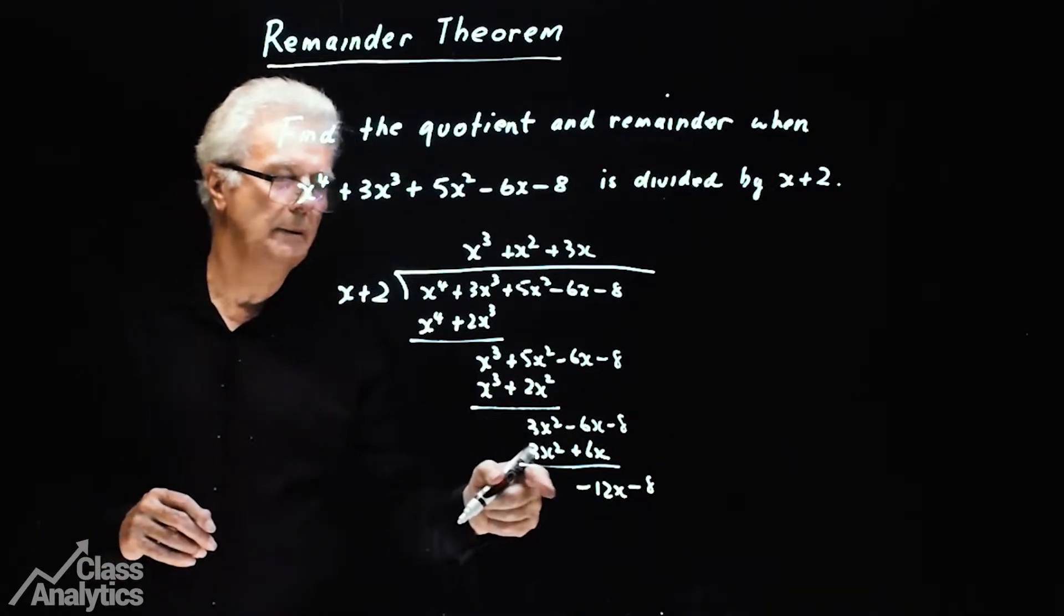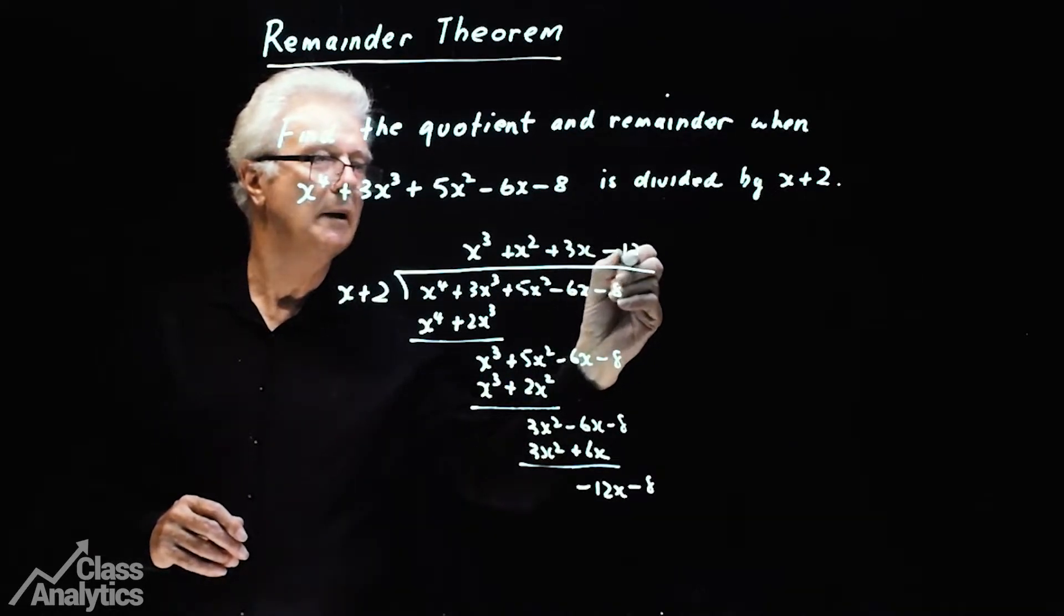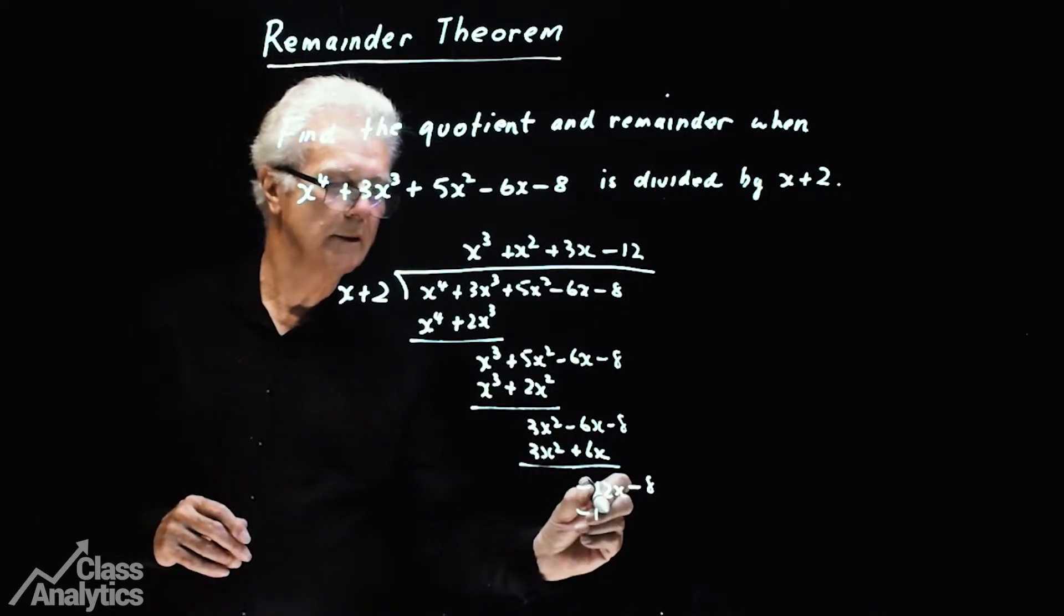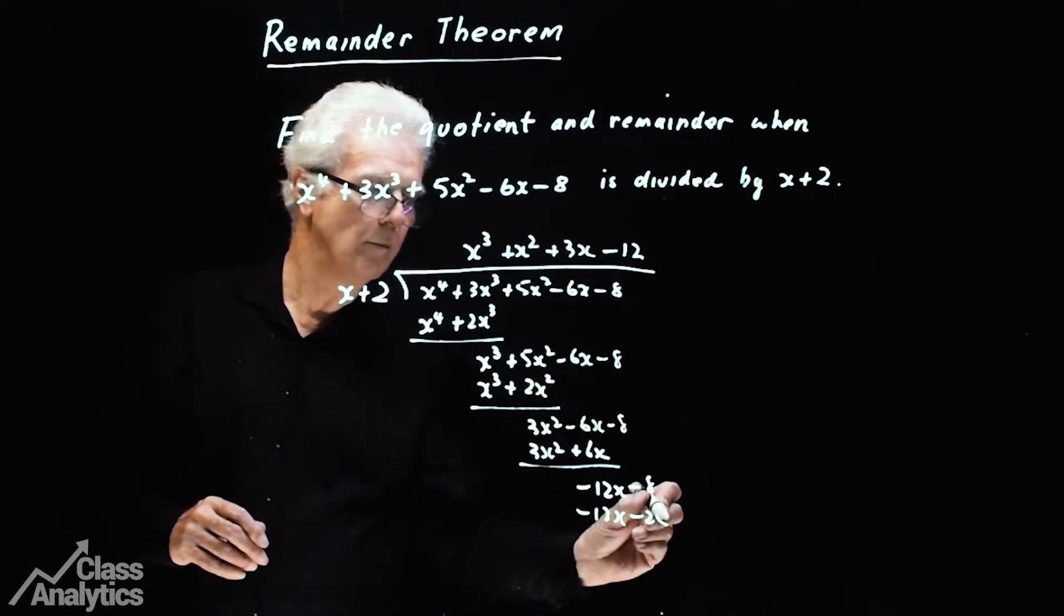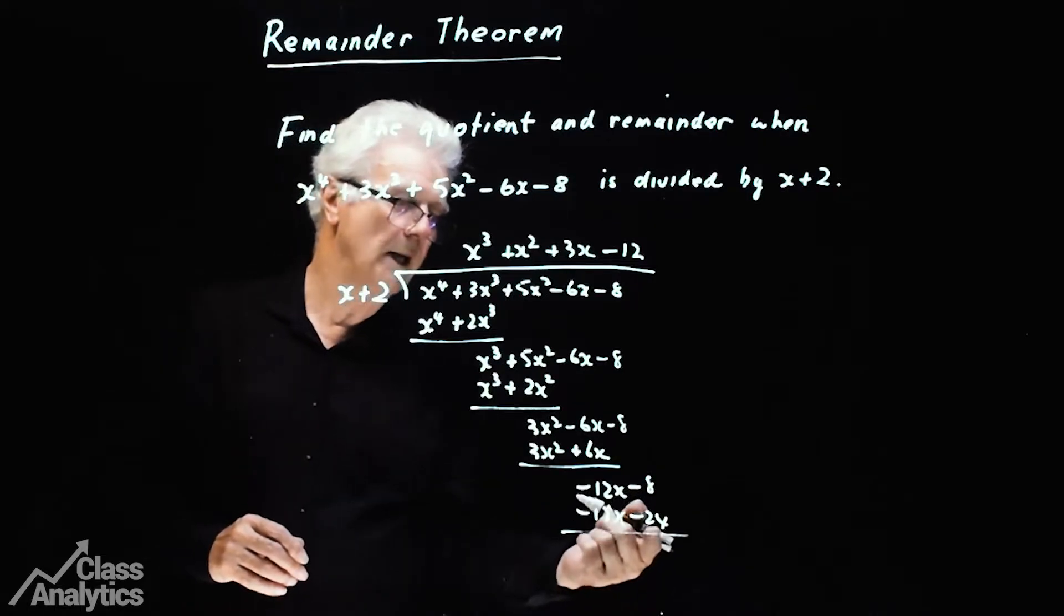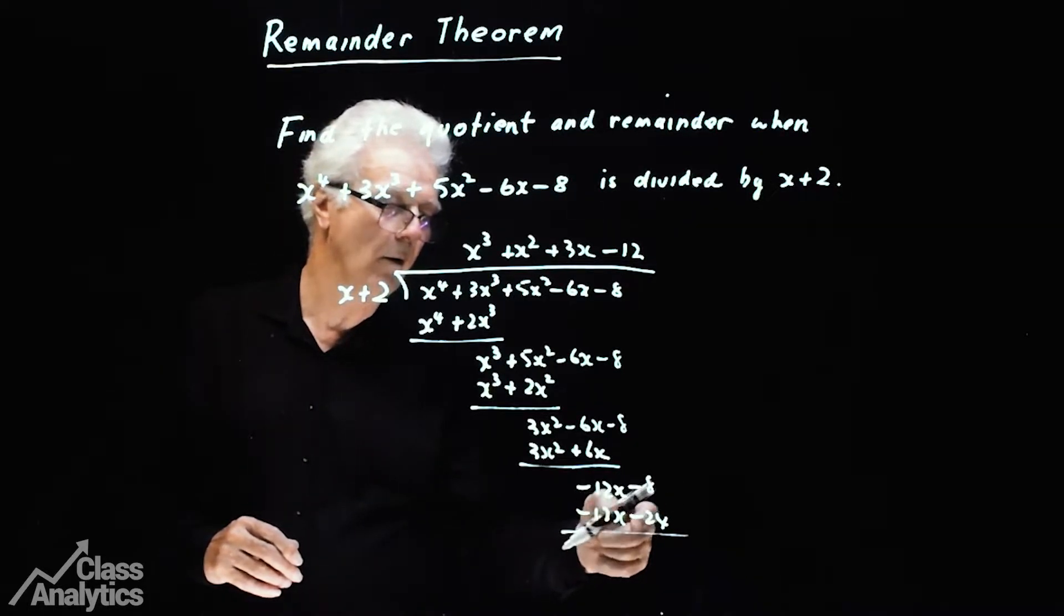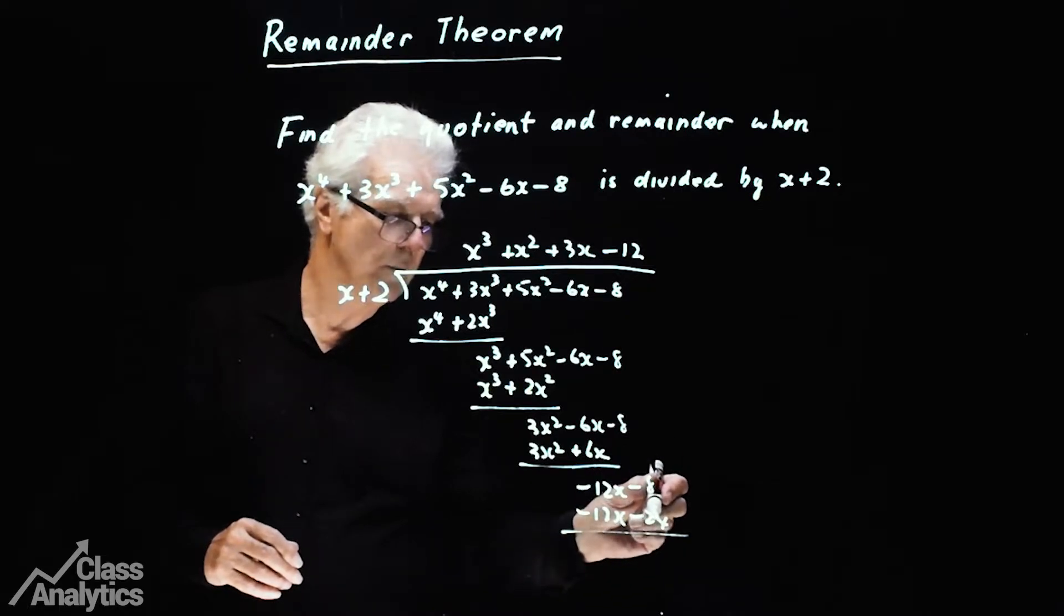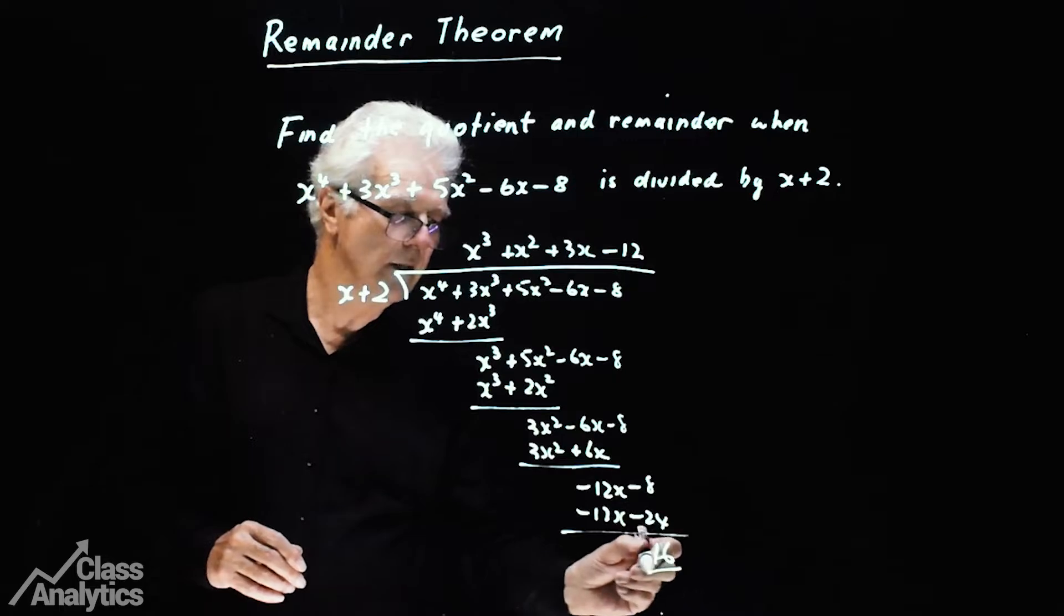I need a minus 12x here to make it minus 12x. And minus 12 times 2 gives me minus 24. Now if that was a minus 8, there would be no remainder. When we subtract it, we get a remainder of subtracting minus 24 from minus 8, which will be positive 16. So that is our remainder.